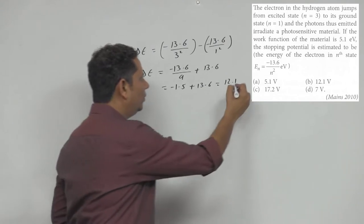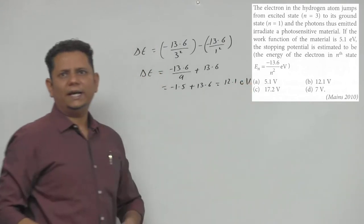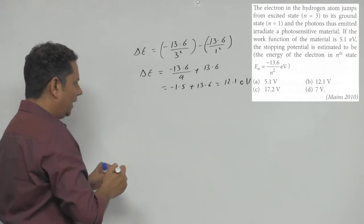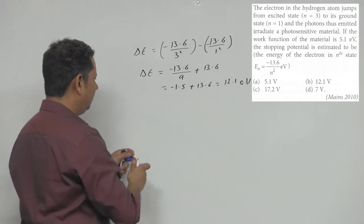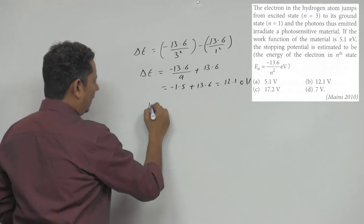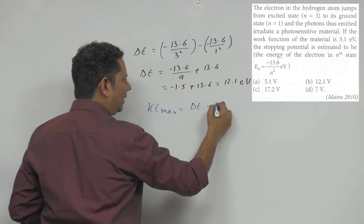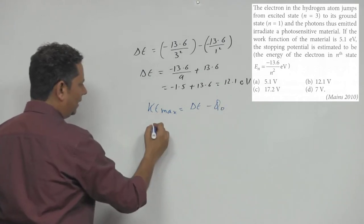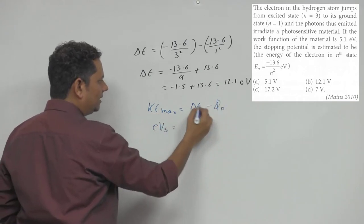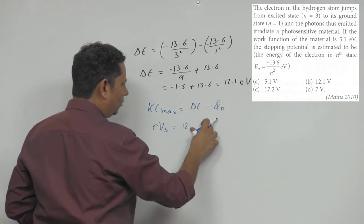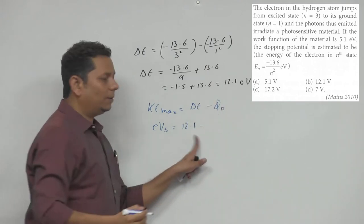This gives us 12.1 electron volts. Now the maximum kinetic energy equals the energy difference minus the work function.